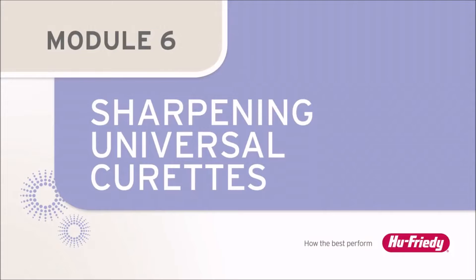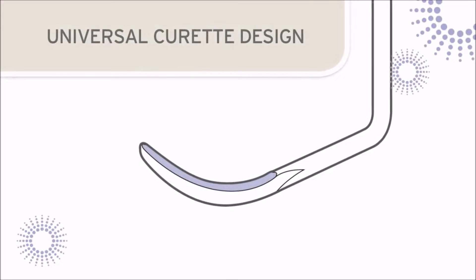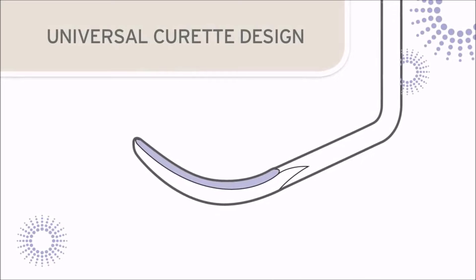Sharpening Universal Curettes. Universal Curettes such as Langer, Columbia, and Barnhart Curettes have two parallel cutting edges.